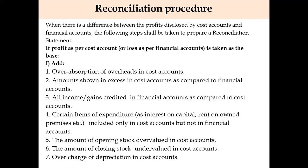Items to be added include over absorption of overheads in cost accounts. Any overheads — factory overhead, administration overhead, or selling and distribution overheads — that are overvalued or over-recovered or over-absorbed in cost accounts compared to financial accounts, the excess amount is added in this format. Sometimes problems will directly give you the over-absorption amount, such as 5000, which you add directly. If different amounts are given for the two sets of accounts, the difference amount, if overvalued in cost account, will be added.